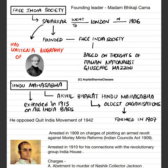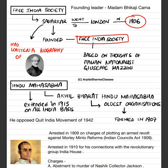Then we have the Free India Society, which was founded by Madam Bhikaji Cama. Veer Savarkar went to London in 1906 and founded this Free India Society — one of the founding leaders was also Madam Bhikaji Cama. Savarkar created this society based on the thoughts of Italian nationalist Giuseppe Mazzini. He also wrote a biography on Mazzini — so he was influenced by Italian nationalists, and his ideals were followed by Savarkar in establishing the Free India Society.